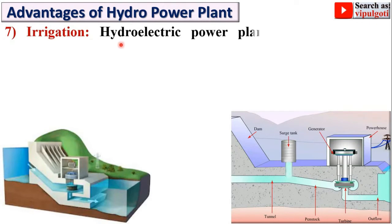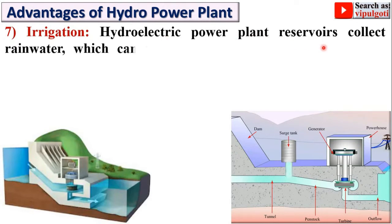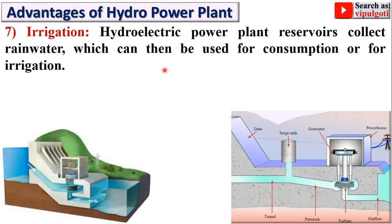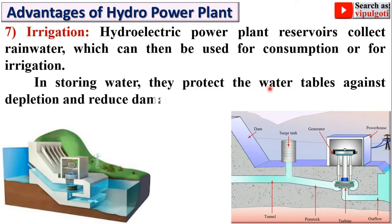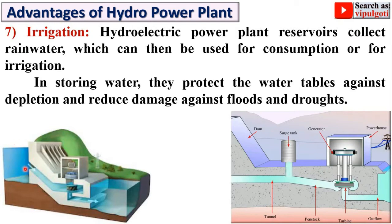Next: Irrigation. Hydroelectric power plant reservoirs collect rain water which can then be used for drinking or irrigation purposes. Storing water also protects water tables against depletion and reduces damage from floods and droughts.